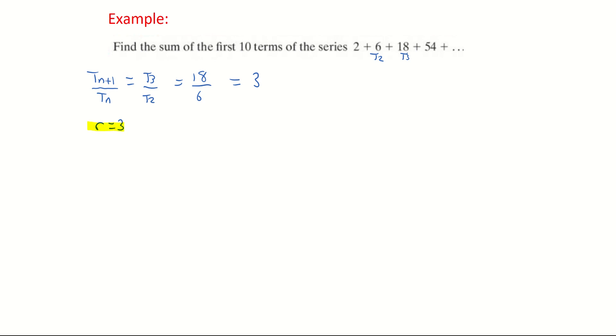We now need to find the value of A, the first term. Well A is going to be 2. That's the first term in my sequence here and that's as much information as I need. The number of terms in the sequence is 10 so I'm also going to write that down. N is standing for the number of terms which is 10.